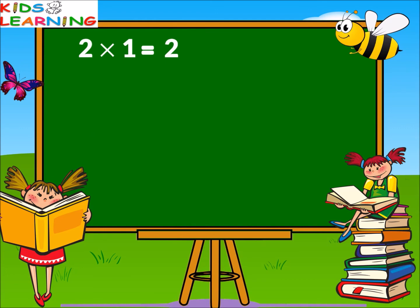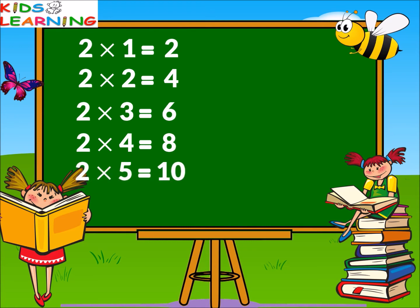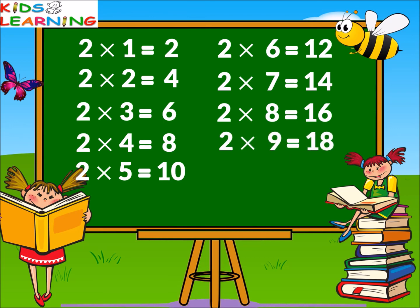Two ones are two. Two twos are four. Two threes are six. Two fours are eight. Two fives are ten. Two sixes are twelve. Two sevens are fourteen. Two eights are sixteen. Two nines are eighteen. Two tens are twenty.